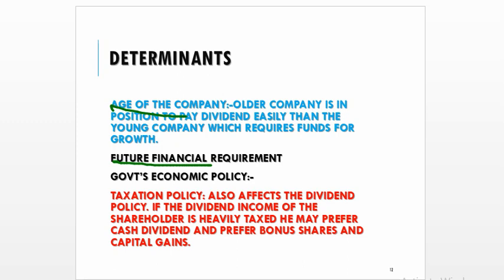While framing dividend policy, the company has to see its future financial plans. If the company is proposing expansion, diversification, or modernization, it will require huge funds, so the company could adopt a conservative dividend policy. Sometimes the government also puts restrictions on the maximum dividend payable. Taxation policy also affects dividend policy — shareholders who are in a high income tax bracket have to pay heavy tax, so they avoid cash dividend and prefer bonus shares and capital gains.